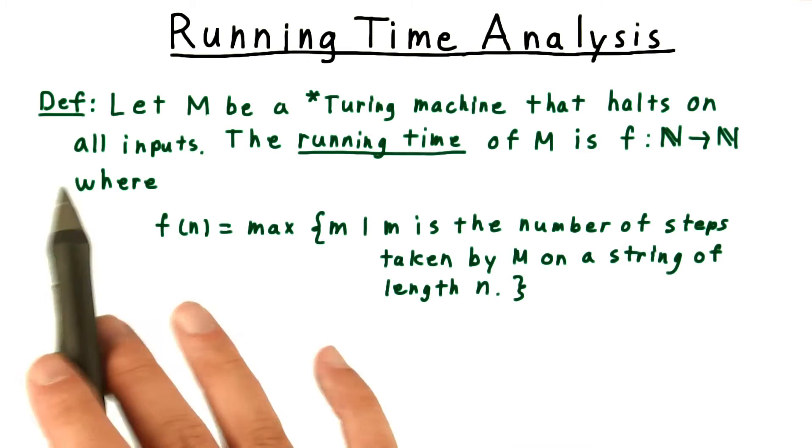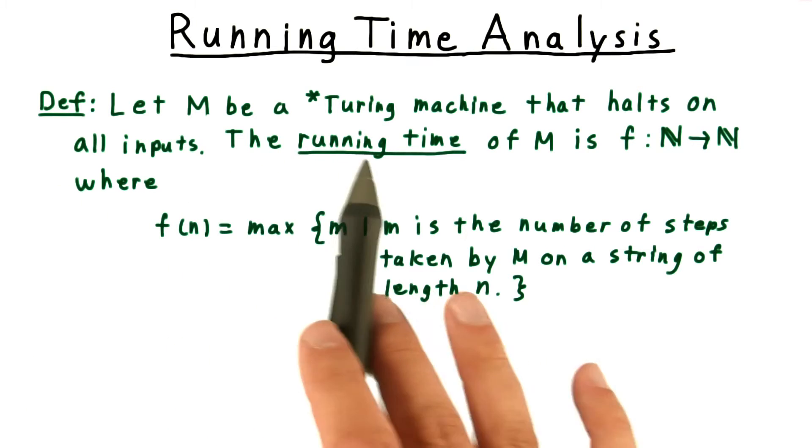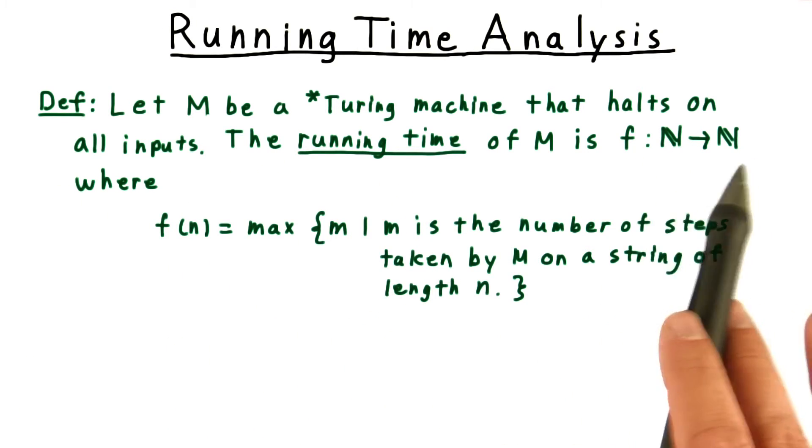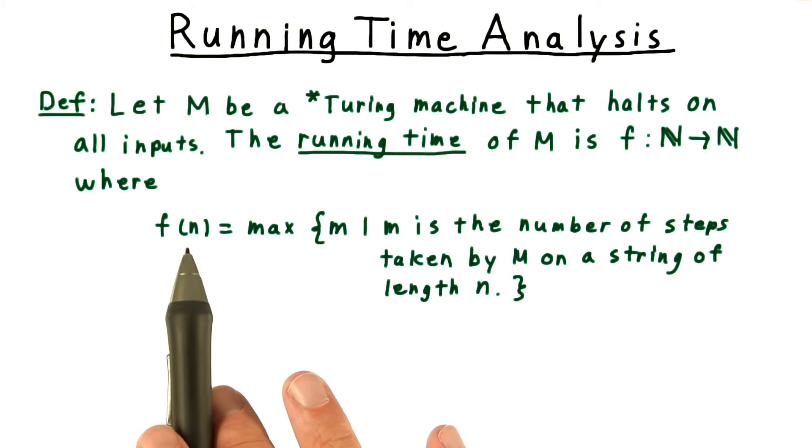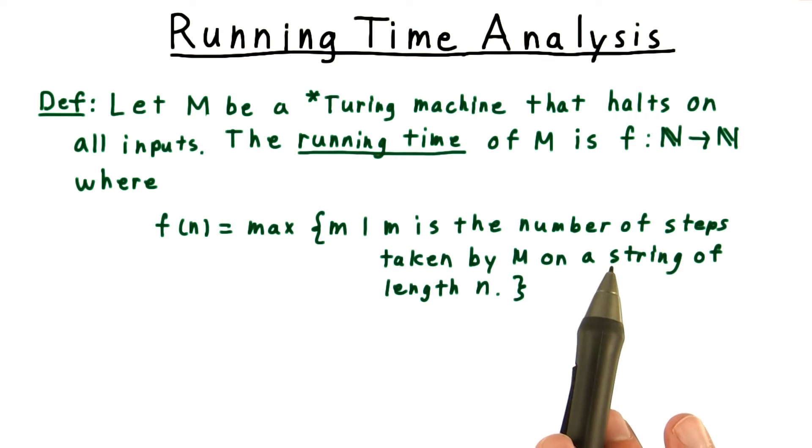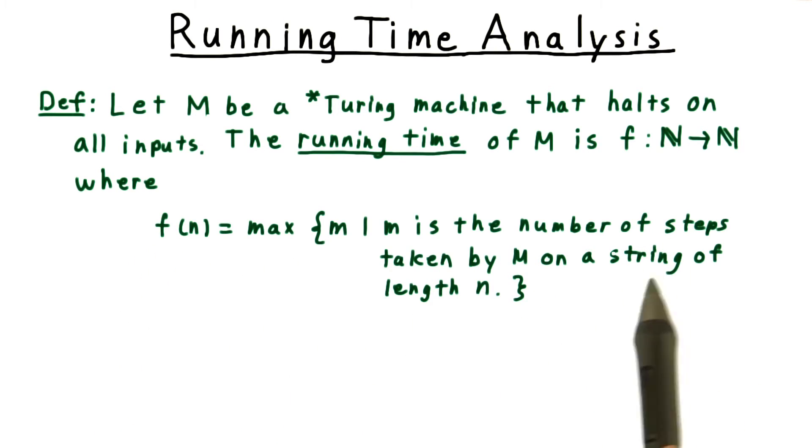And we assume that it halts on all inputs. The running time then is a function over the natural numbers where f(n) is the largest number of steps taken by a machine for an input string length of n.